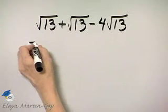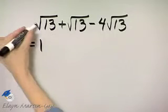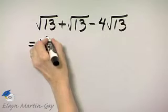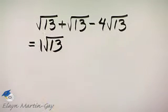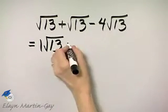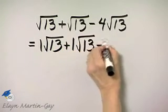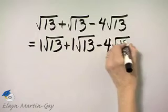If it helps, let me take a step and write this understood coefficient of 1 in front of this square root of 13. So that's 1 square root of 13 plus 1 square root of 13 minus 4 square root of 13.